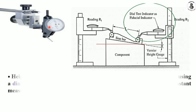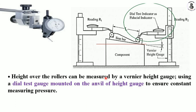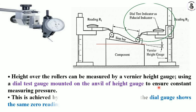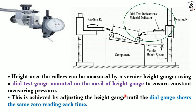The height over the rollers is measured using a vernier height gauge, with a dial test gauge mounted to ensure constant measuring pressure. This is achieved by adjusting the height gauge until the dial gauge shows the same zero reading each time. For large-size jobs, the formula is: sine θ = (r1 − r2) / L, where L depends on the selected sine bar size.